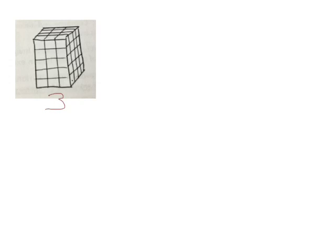Here we have a rectangular prism that is 3 across, 4 long, and 5 high. We're going to imagine what the bottom layer of this prism would look like. The bottom layer would be 3 rows with 4 cubes in each row — 12 cubes in all: 3 wide, 4 long, 1 cube high.